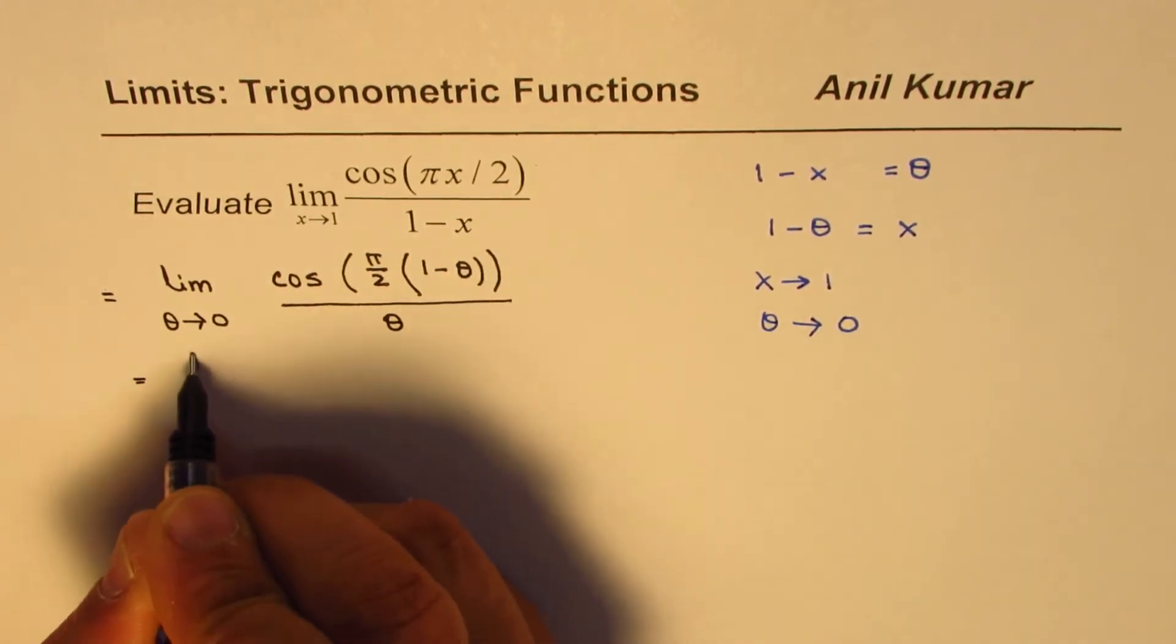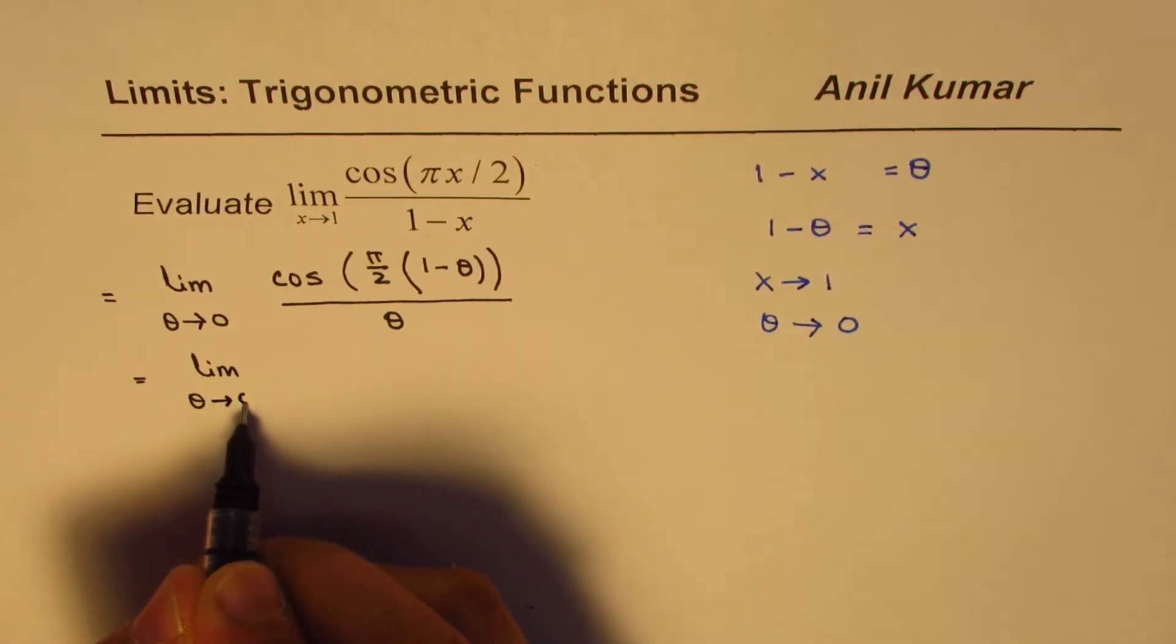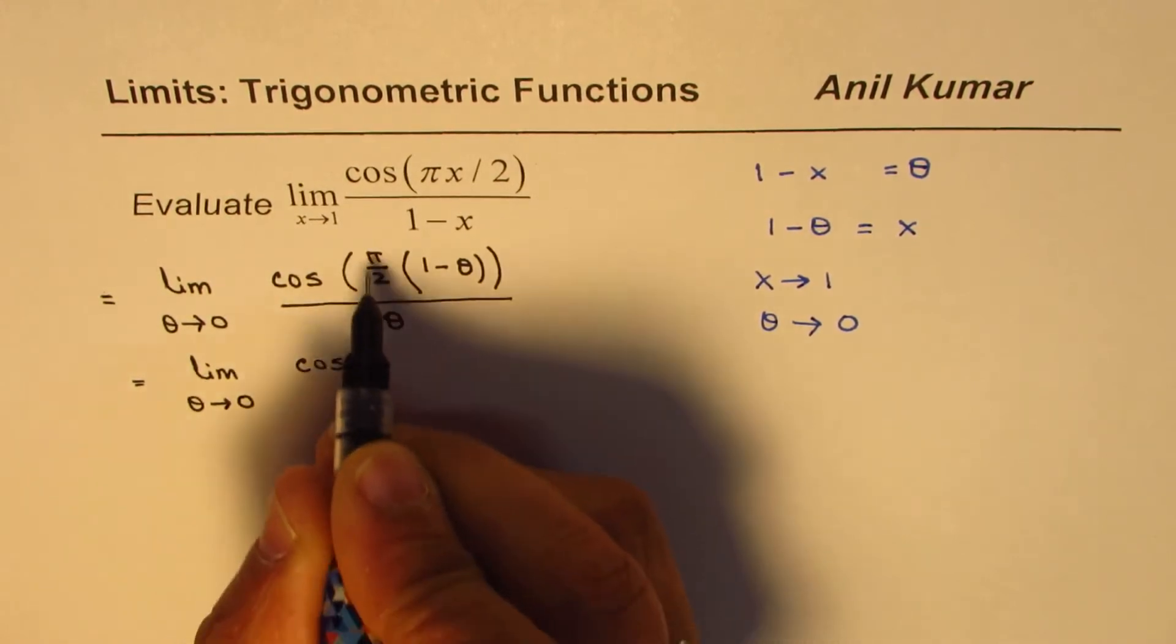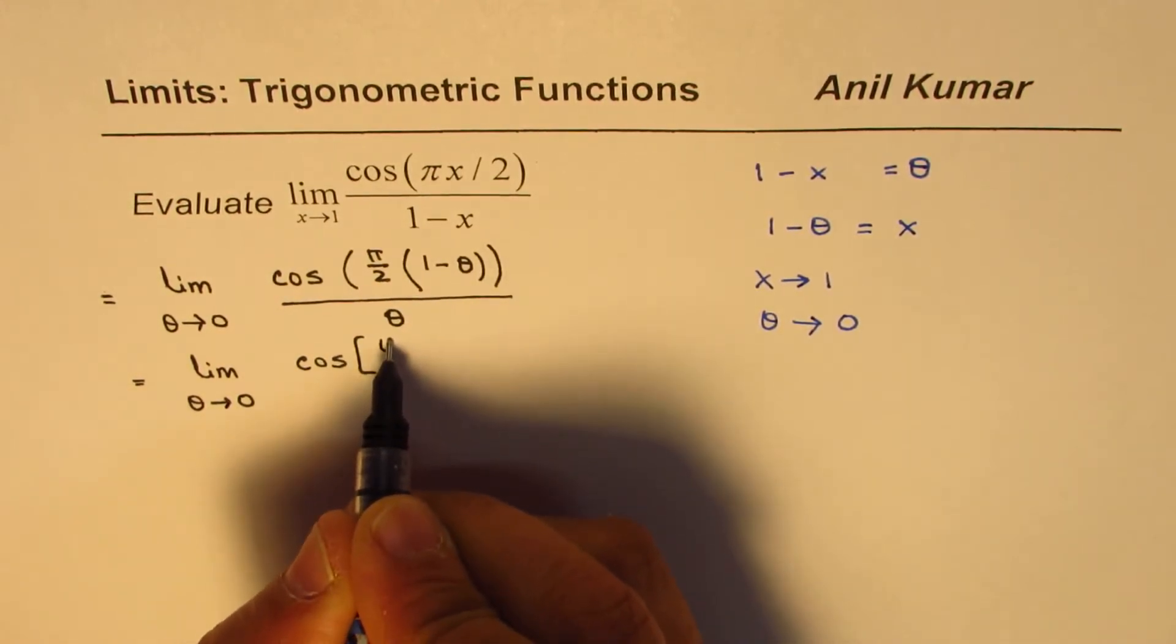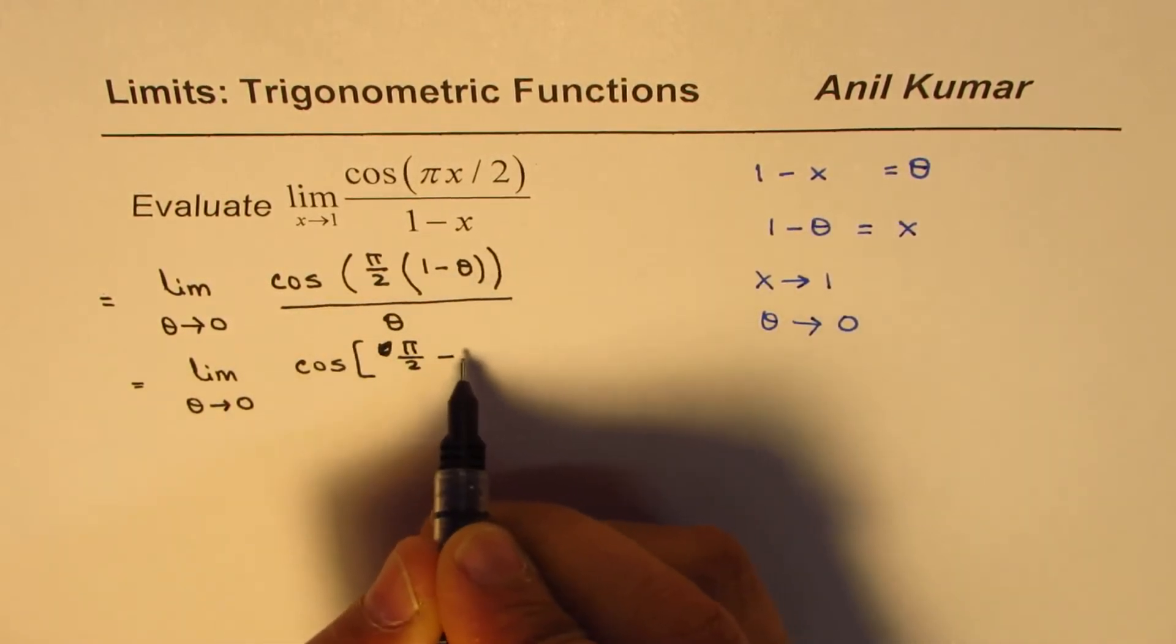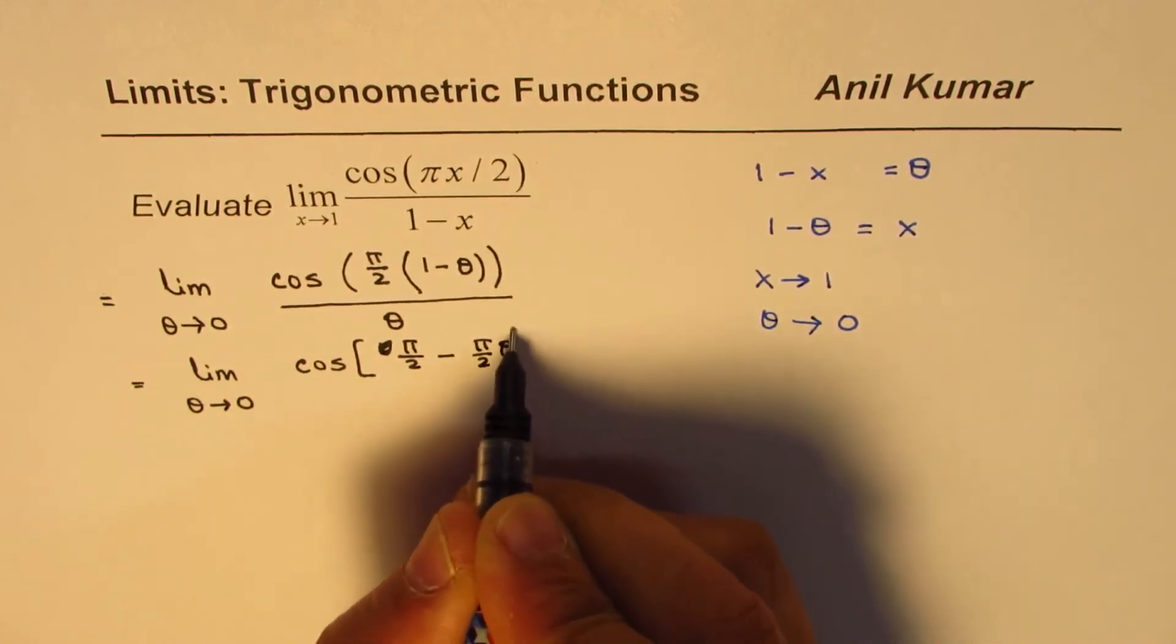So what we have here is limit as θ approaches 0. And here, we could write this as cos(π/2 - πθ/2), right? π/2 θ.